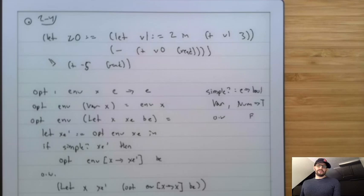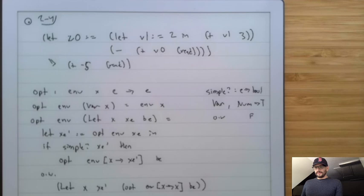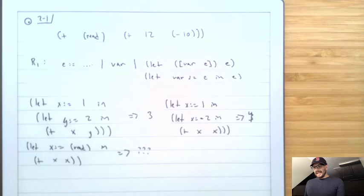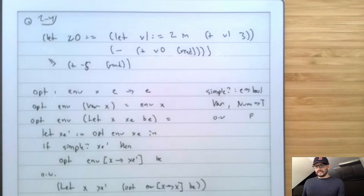At this point, we now have a more advanced language R1 with addition, subtraction, variables, and let statements. That language, even though it's really simple, is going to be big enough for us to build an interesting compiler. We're going to spend a lot of time with this exact language trying to get it to compile.